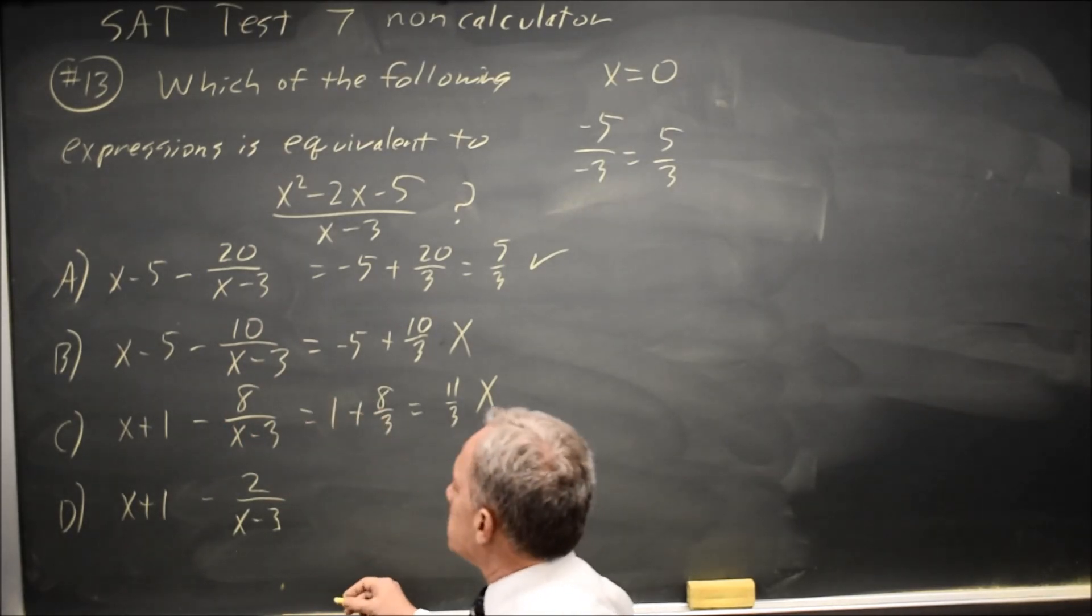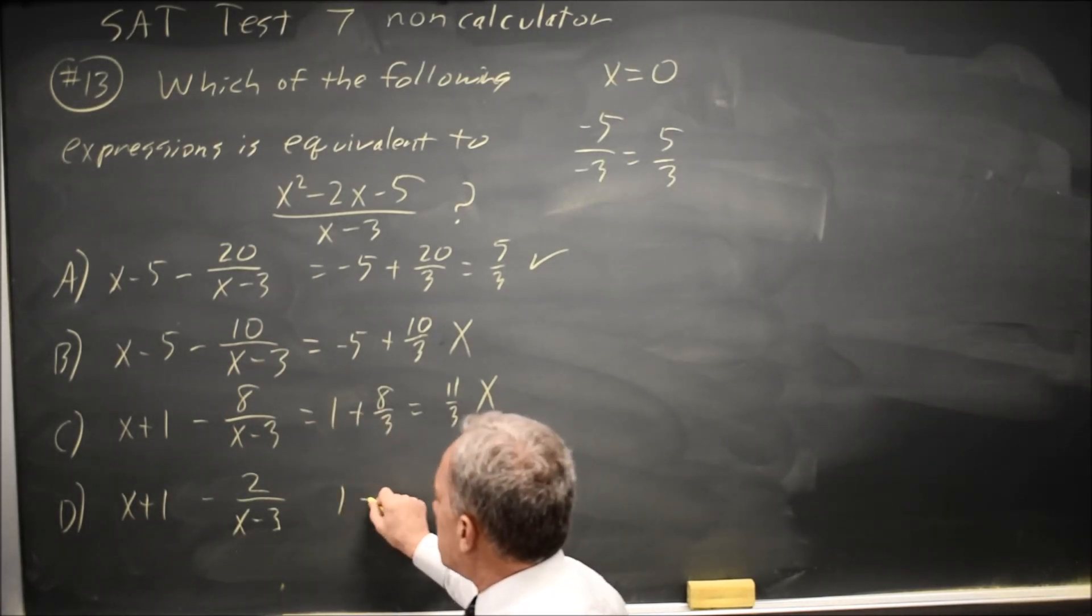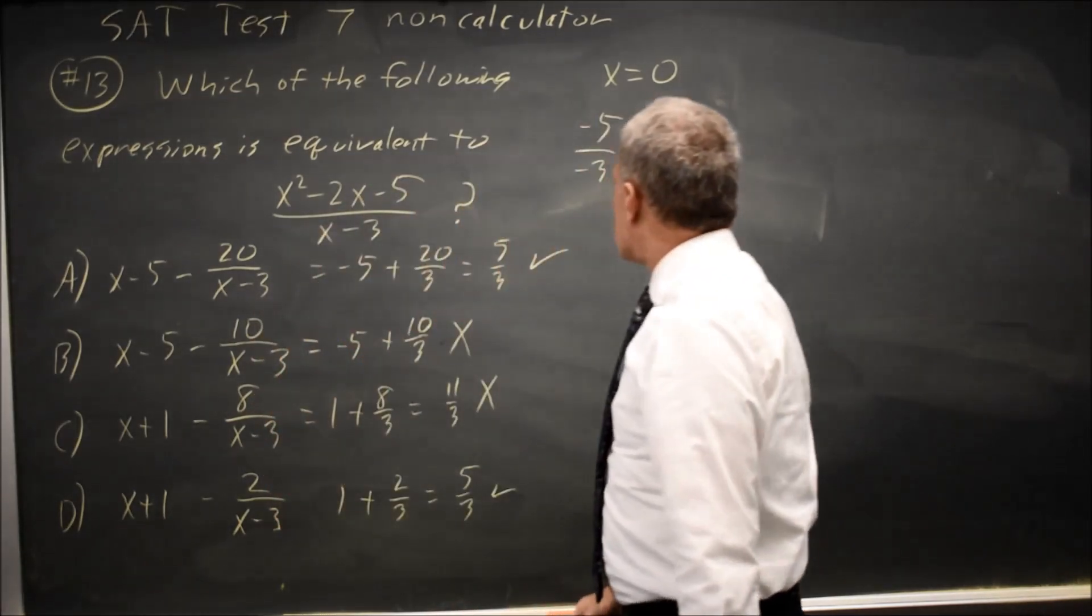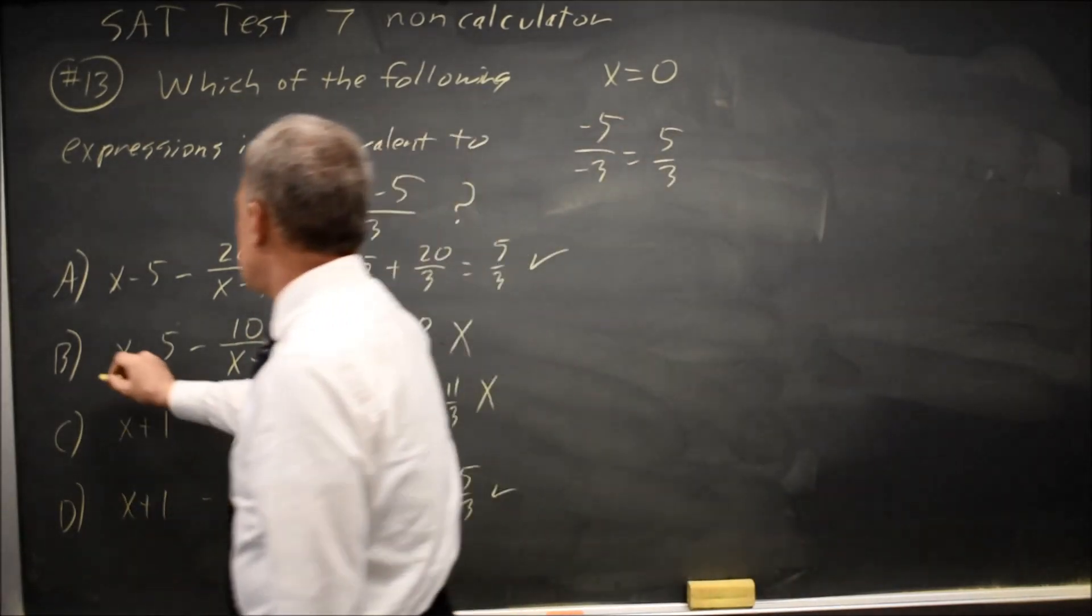And 0 plus 1 is 1 minus 2 over negative 3 is plus 2 over 3. 3 over 3 plus 2 over 3 is 5 over 3. So choices A and D work, B and C do not.